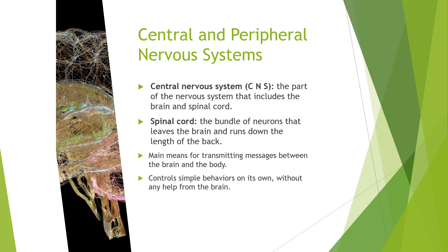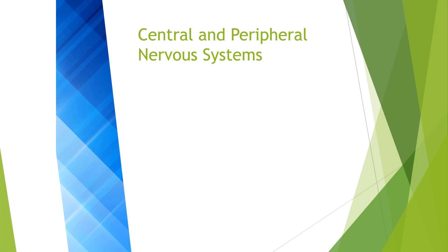The spinal cord also controls simple behaviors on its own without any help from the brain. In an emergency type of situation, sometimes you don't have time for the message to travel to the brain, so it's almost like a reflexive type of action. A reflex is an automatic, involuntary response to an incoming stimulus — automatic and involuntary, meaning you do not have control over it. It just automatically happens.